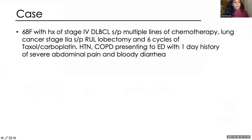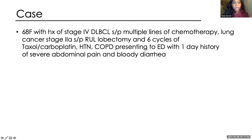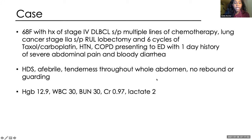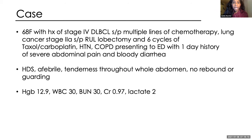I'll start off with the first case. We have a 68-year-old woman with a history of stage 4 diffuse large B-cell lymphoma and lung cancer. She's status post several cycles of chemotherapy, hypertension, COPD. She presents to the ED with one day of severe abdominal pain and bloody diarrhea. She's hemodynamically stable, afebrile, tender throughout her whole abdomen, but there's no rebound or guarding. Her initial labs include a hemoglobin of 12.9, which is her baseline, a white count of 30 with a baseline of normal range, a BUN at 30, creatinine at 0.9, and a lactate of 2.